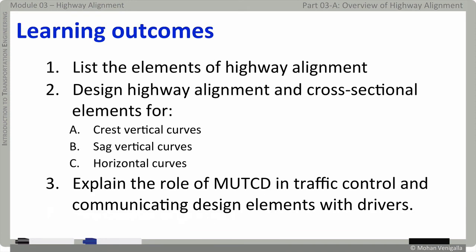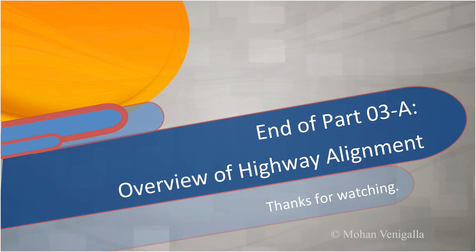The learning outcomes of this module: at the end of this module, you should be able to list the elements of highway alignment and design highway alignment and cross-sectional elements for crest and sag vertical curves, as well as horizontal curves. Additionally, you should be able to explain the role of MUTCD in traffic control and how MUTCD communicates design elements with drivers. That marks the end of part 3a.